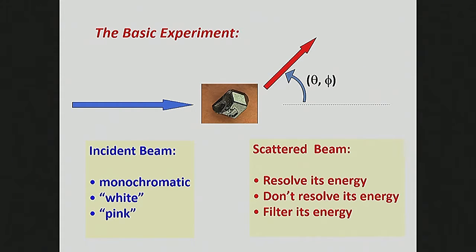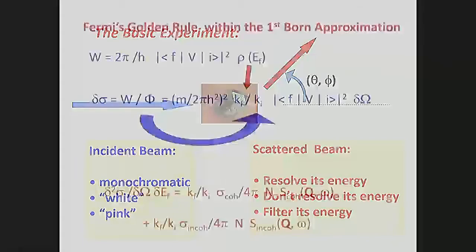With the scattered beam, your choices are: once you've defined the direction, you either resolve its energy — breaking the scattered beam into its different energy components — or you don't resolve its energy, or you filter its energy. Those are basically the three choices. Different instruments do different things here — that's what the different instruments at the SNS and at the reactor do.